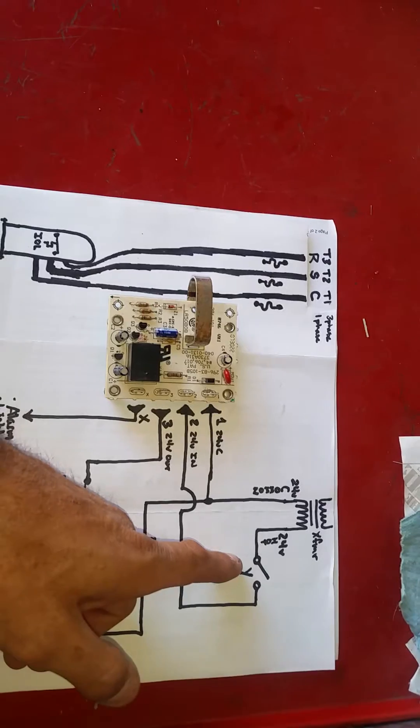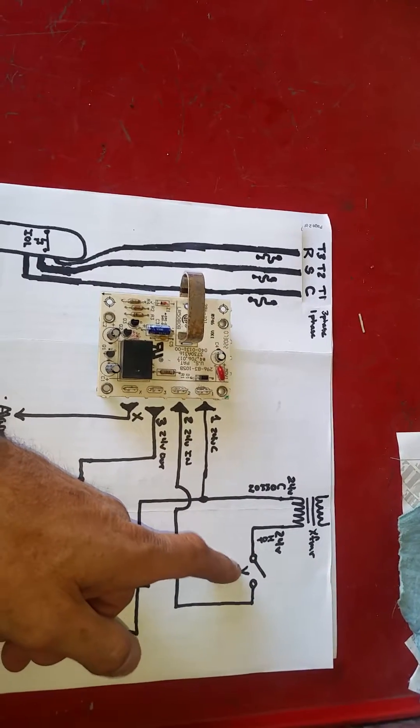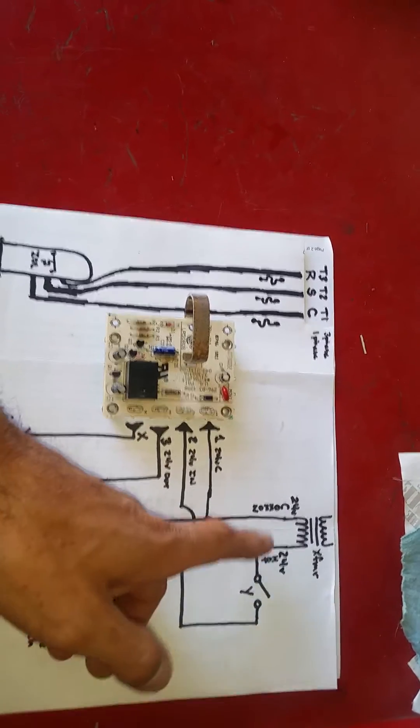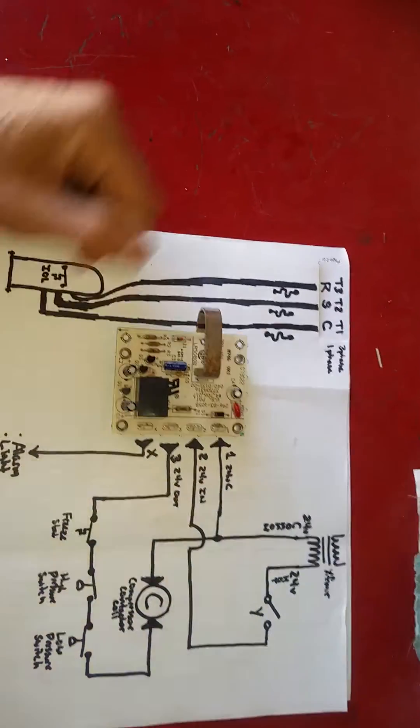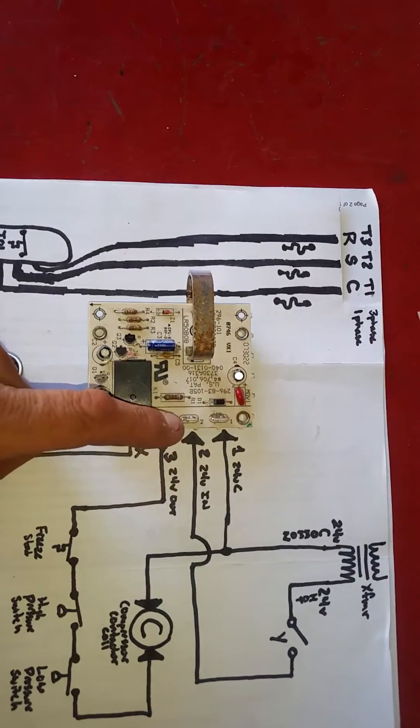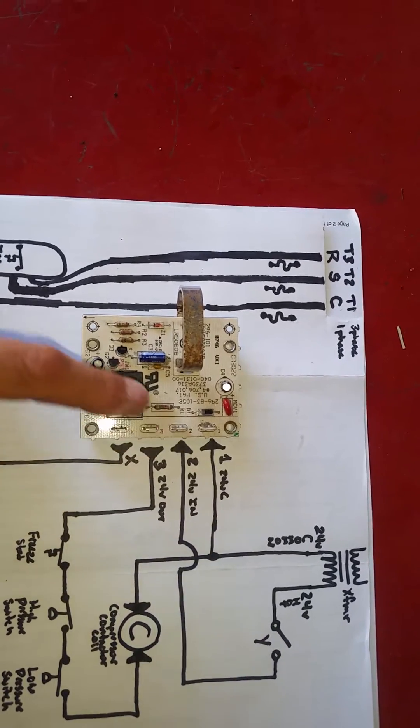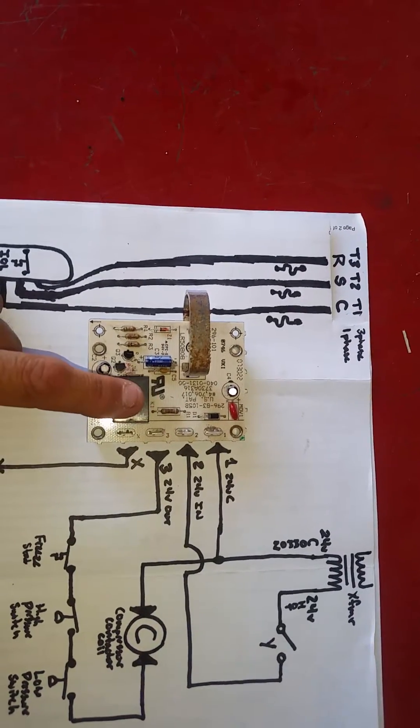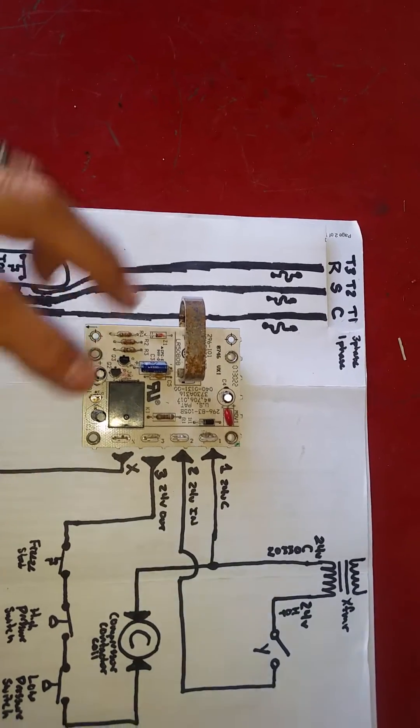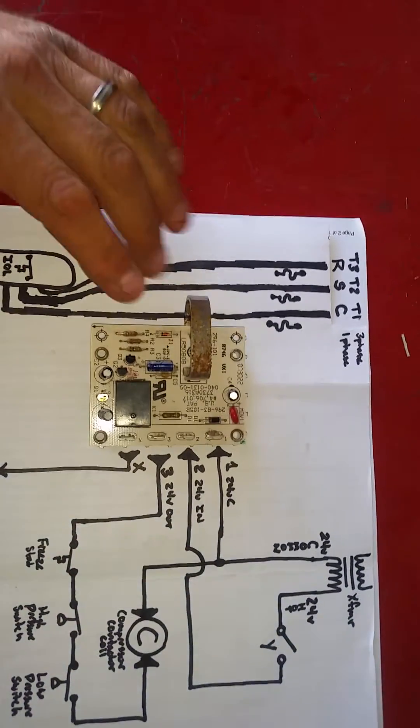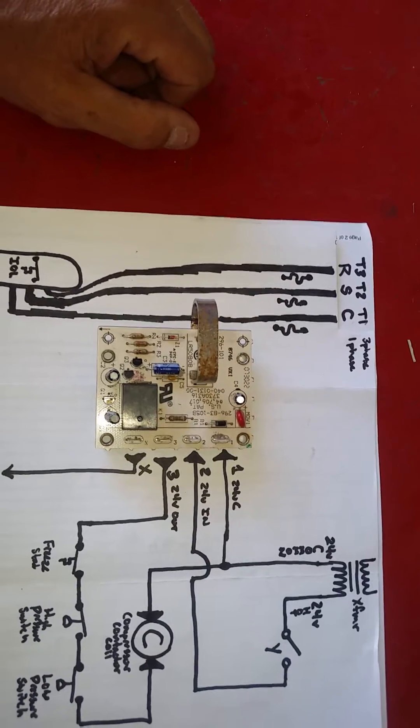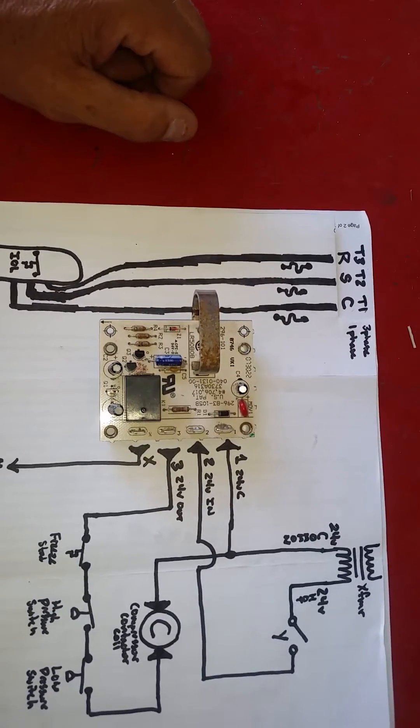When there's a call for cooling, our thermostat closes the Y, and sends 24 volts from our transformer to our CLO board, to pin two. We need to realize that this is a normally closed relay. This board is considered de-energized, or not in function at this moment. It is in a de-energized state.